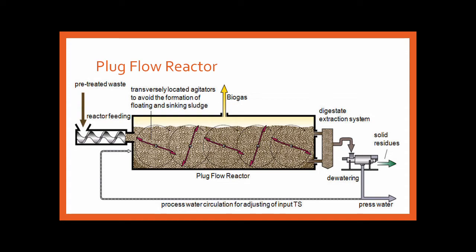The plug flow reactor is usually used for biogas production. Waste product comes in as reactor feed — this is inside the reactor, which has agitators to move the viscous sludge material containing solids forward. As the organisms move forward, biogas is produced. Solid residues are extracted out, press water is collected, and water circulation can be adjusted — recycled water from a dewatering or separator tank can be injected if the feed is too dry.